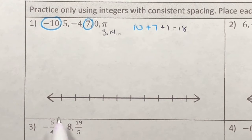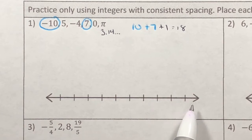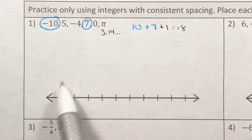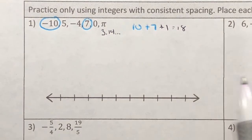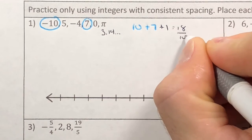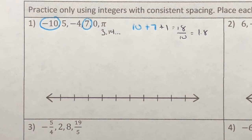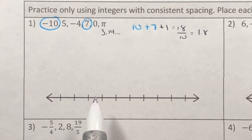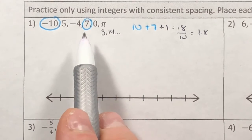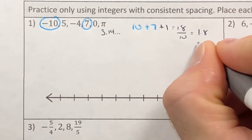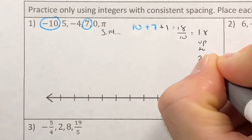I count my spaces on the number line: 1 through 10, giving me 10 spaces. I need to fit 18 different numbers into 10 spaces, so I divide 18 by 10, which gives me 1.8. I know that if I started at negative 10 and counted by 1.8, I'd end up at 7. But I have to have integer spacing, which means I'm going to round this up to 2.